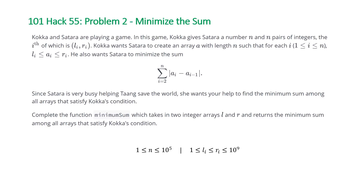the i'th of which is li and ri. Koka wants Sitara to create an array a with length n such that for each i, where i is between 1 and n, li is less than or equal to ai and that is less than or equal to ri. He also wants Sitara to minimize the summation from i equals 2 to n of the absolute value of the difference between the elements at i and i-1.